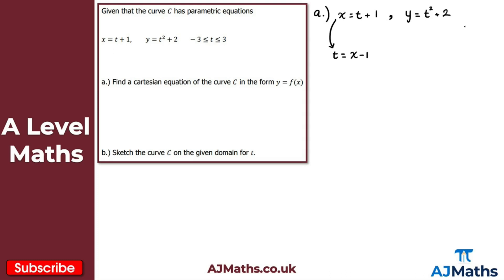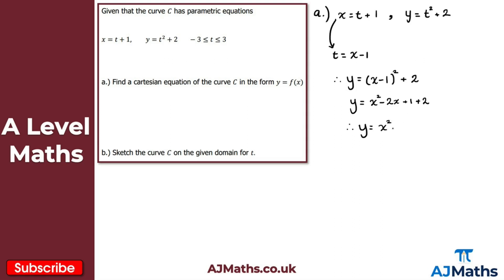We substitute t equals x minus 1 into the equation for y. So y equals t squared becomes y equals (x minus 1) squared, and don't forget the plus 2, giving y equals (x minus 1) all squared plus 2. Expanding the brackets: y equals x squared minus 2x plus 1 plus 2, which simplifies to y equals x squared minus 2x plus 3. That's the solution to part (a) — we have it in the form y equals f of x.